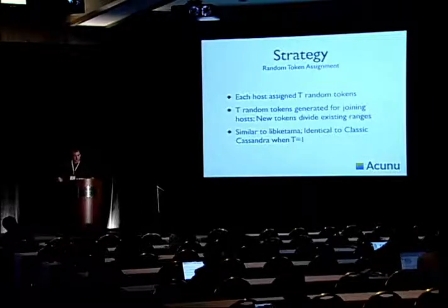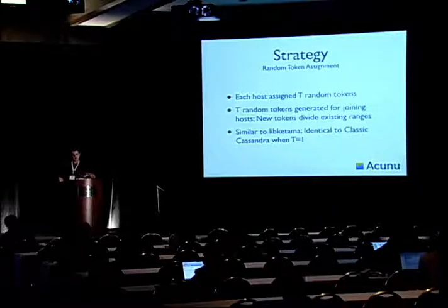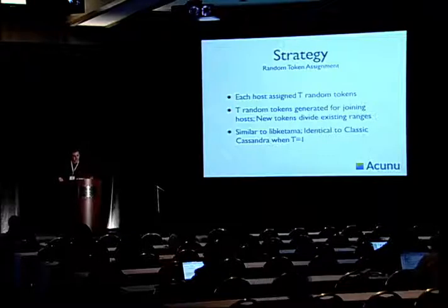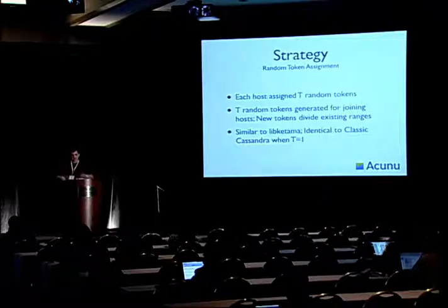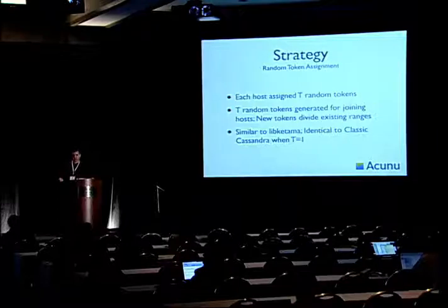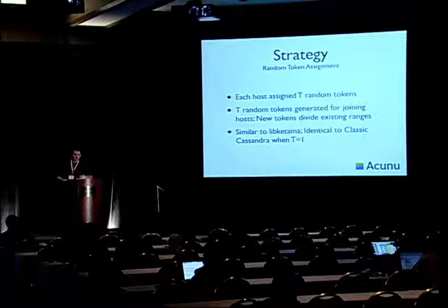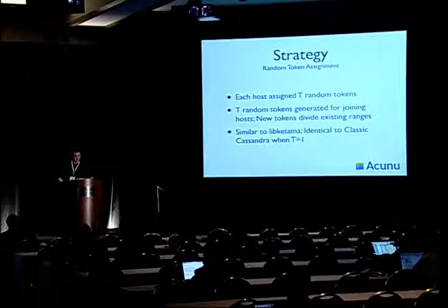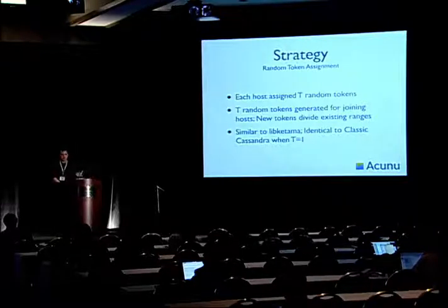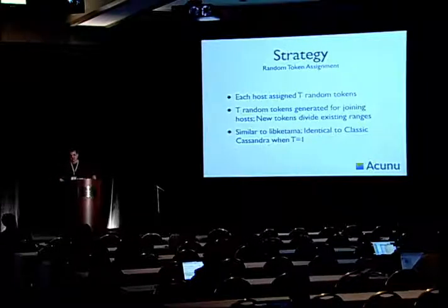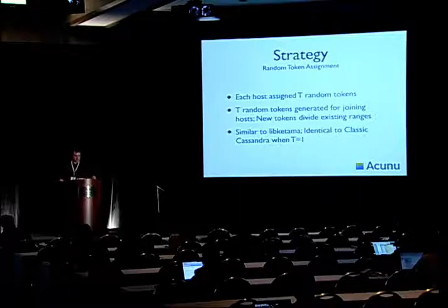Finally, random token assignment works by giving each node in the cluster a fixed number of tokens — call that T. These are randomly calculated — we just randomly generate tokens, partition identifiers from within that namespace. We talked earlier about the hash namespace: murmur3 or maybe MD5, so this might be randomly generated 128-bit values. Every new joining node simply generates another T random tokens, which will inevitably cut into some existing key space held by other nodes. If you're familiar with libketama, this is kind of how it does it. And if you generalize Cassandra's legacy system — where T equals one — this is basically how we've been doing it all along.